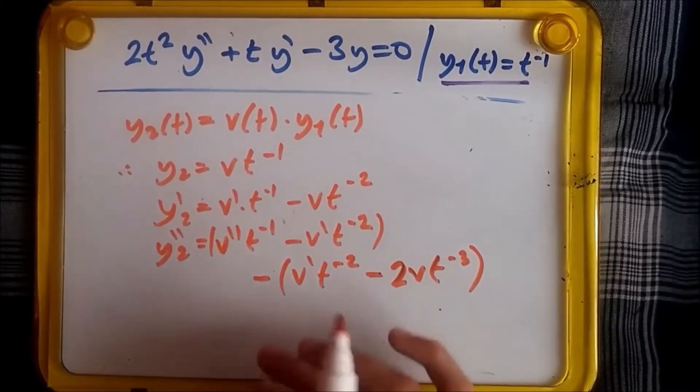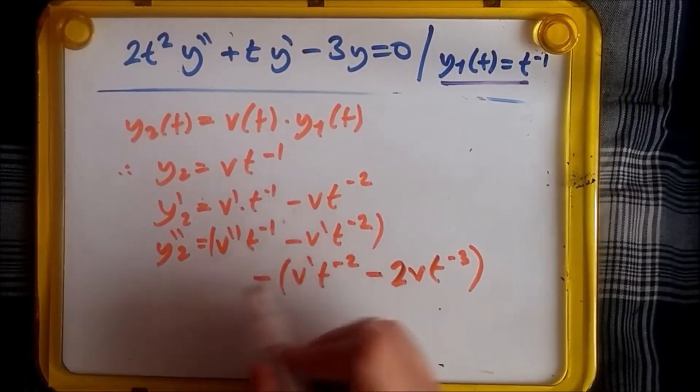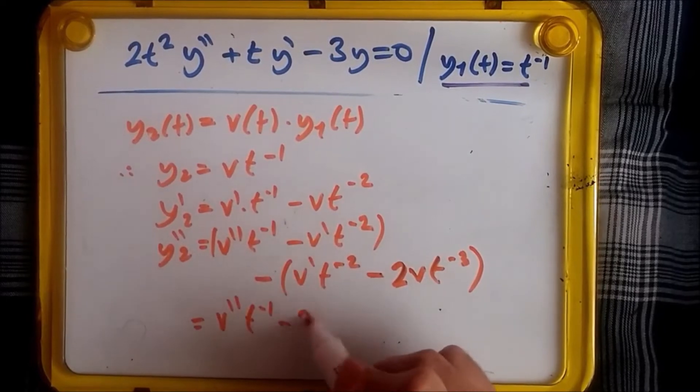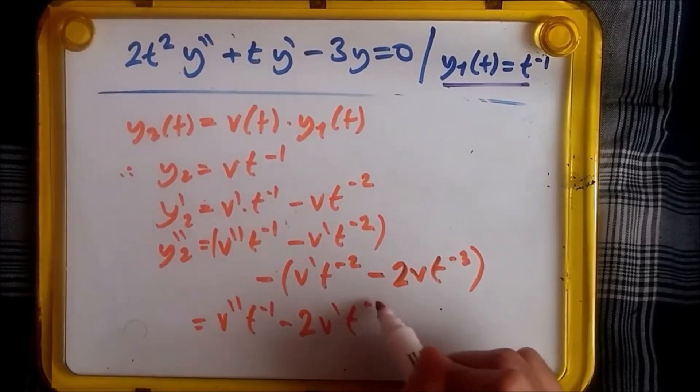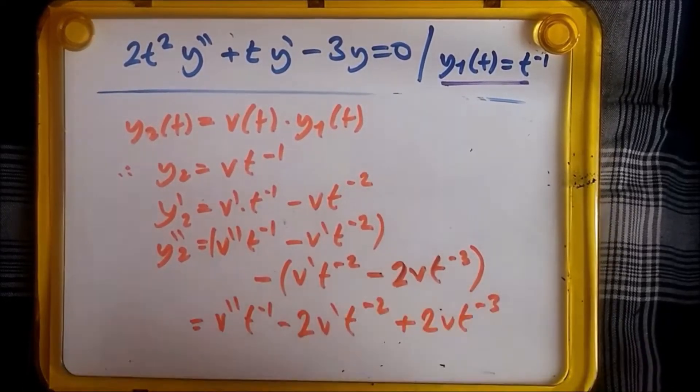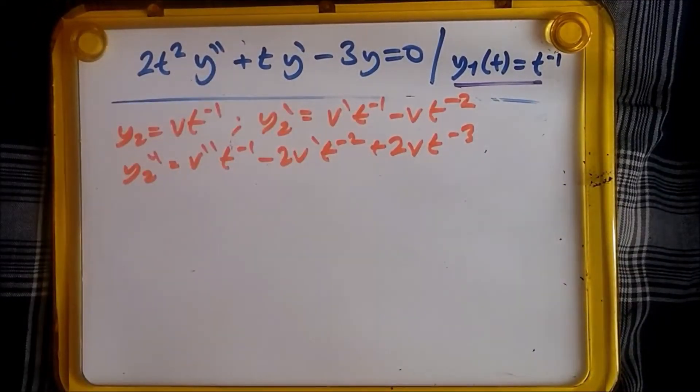Okay, so far so good. Now just simplifying all of this. This time here we know we've got these two terms, so these two are collected. We should get v double prime times t to the minus one, two lots of this so minus two v prime t to the power negative two, plus flip the sign two v times t to the power minus three. So now let's plug this back into the equation.